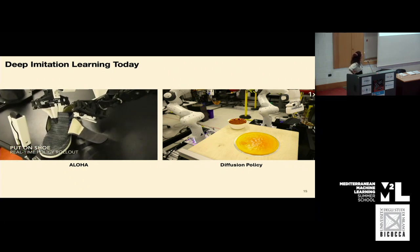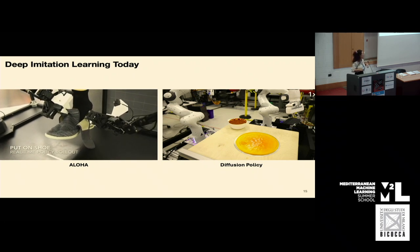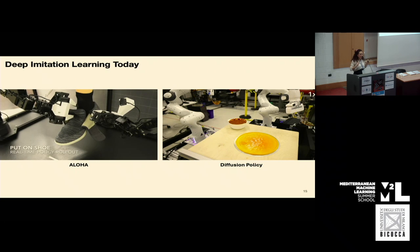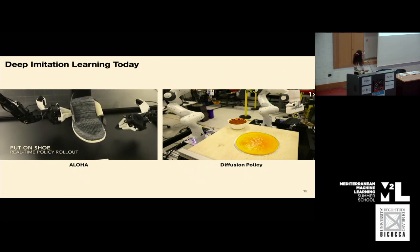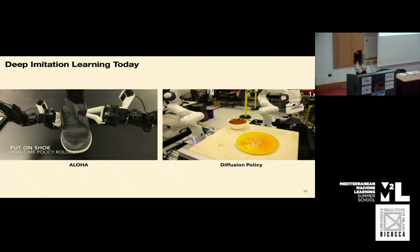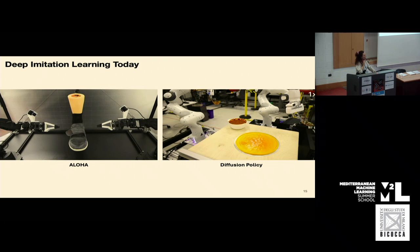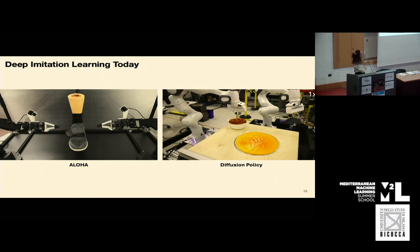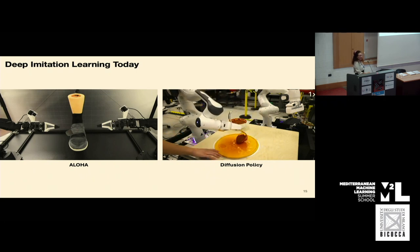Deep imitation learning today looks like ALOHA Unleashed — a teleoperation system with a master-slave setup where you manipulate arms on your side and the robotic system maps exactly what you do. You can do things like putting a shoe on a human. It's a promising setting also used for robotic surgery. They collected 26,000 data points over a year to solve five tasks. We also have new models like the diffusion policy — a diffusion model that allows us to do things like making a pizza.